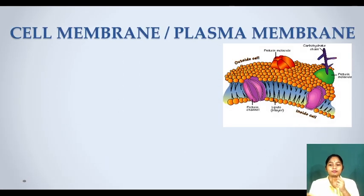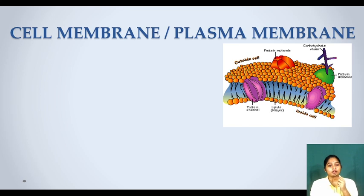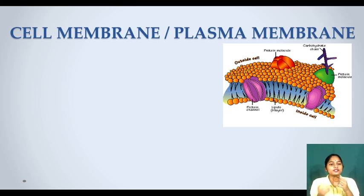The first one is cell membrane, also called plasma membrane. Membrane means a covering. So tell me, why do we cover a cell? Why do we cover anything — to protect it? We cover our book so it won't get damaged. We cover our mobile phone so it won't get hurt. Like that, the cell also needs protection. To protect itself, the cell has a membrane which is called the cell membrane.